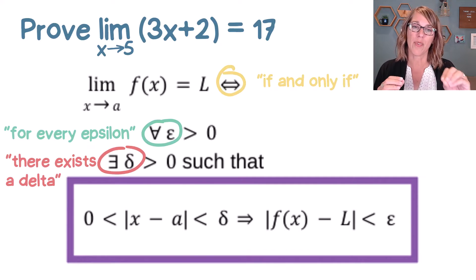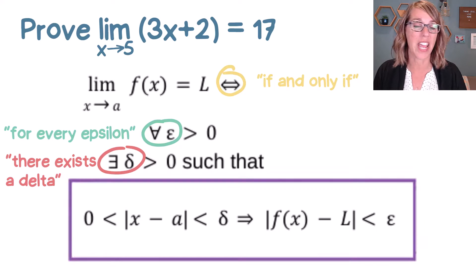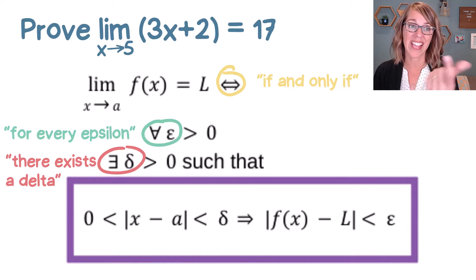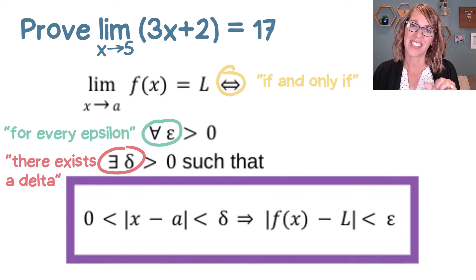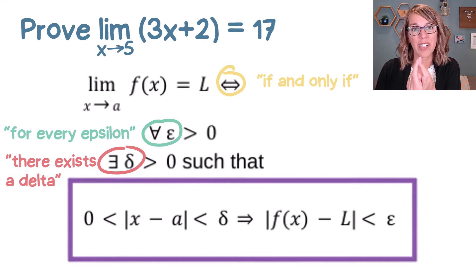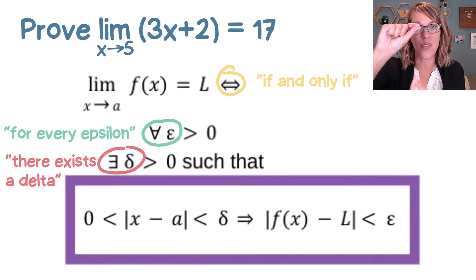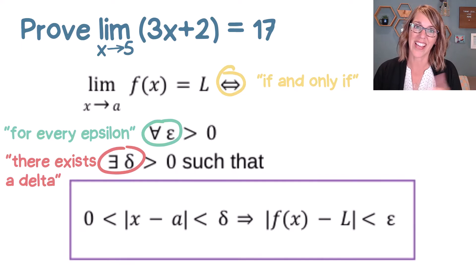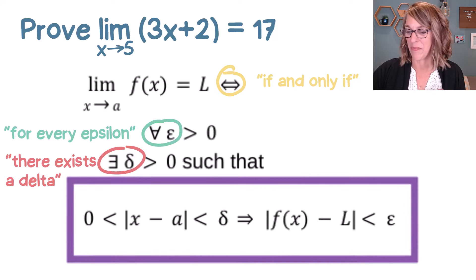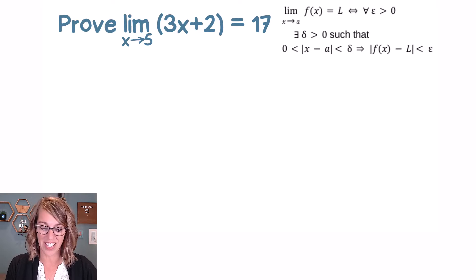We're going to start with this inequality: 0 less than the absolute value of x minus A — that's just the distance between x and A. Here in this example, A is 5, and it's less than delta. So as we shrink down to the value we're looking at the limit at in the x direction, we're also shrinking down to the limit in the y direction. This implies that the difference between f(x) and L is less than epsilon. Using that as our roadmap, let's go through this example.